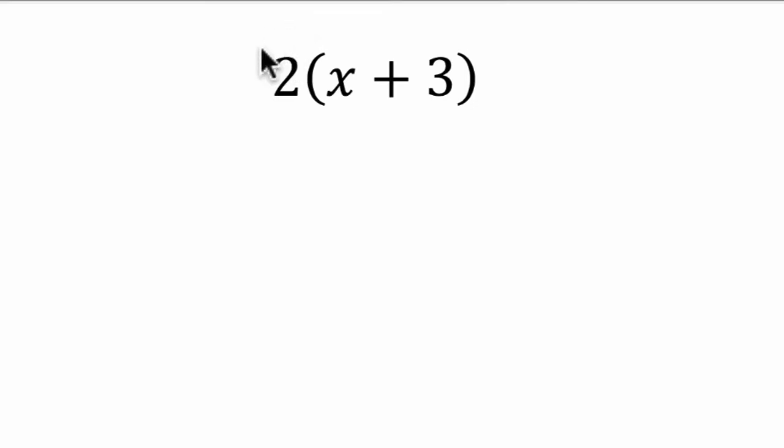The goal of this problem is to simplify, but in this case, the only simplification we can do is to multiply this two, this factor, by all of the terms - the x term and the three term - inside the parentheses. So that just means we distribute the two to the x and the three over addition.